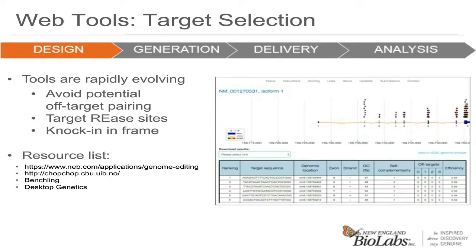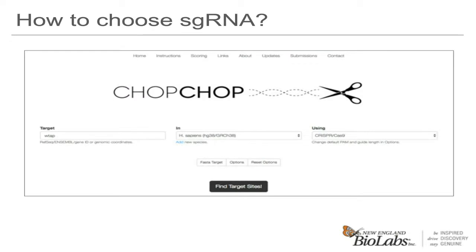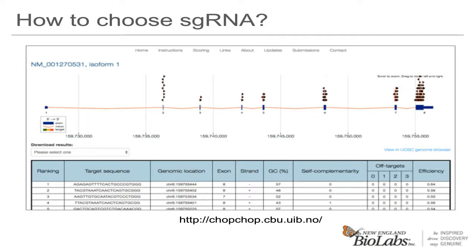When you go to a site like CHOPCHOP to search for targets, you are able to enter your gene of interest, specify the organism and the CRISPR protein you are using, and ask it to find possible targets. The output screen from CHOPCHOP depicts the gene of interest complete with exons and introns, and marked by arrows are the potential Cas9 target sites. Below that will be displayed a list of potential Cas9 target sites which you can use to design your guide RNAs.